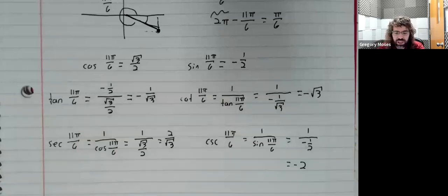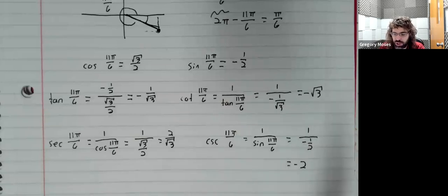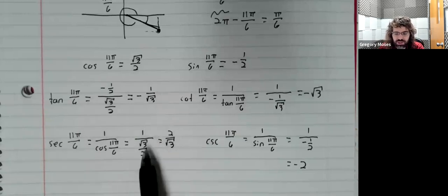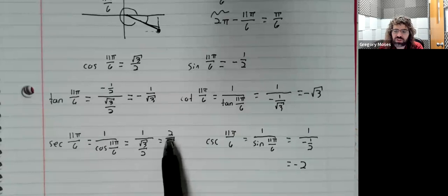And again, these positive and negative signs just come from whatever you're dividing. The cosecant is a positive number over a negative number, so it's negative, whereas the secant is a positive number over a positive number, so it's positive.